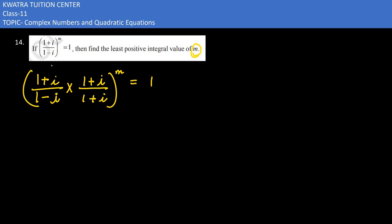Which identity can we use? (a+b) whole square. 1 plus i appears twice. In the denominator you'll get 1 squared minus i squared, to the power m equals 1.